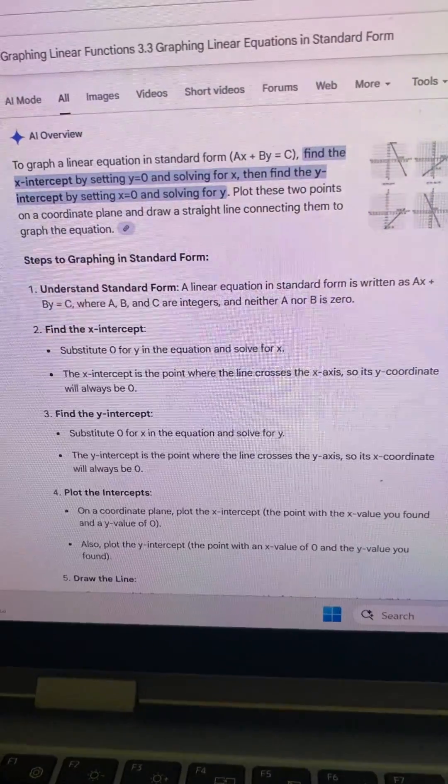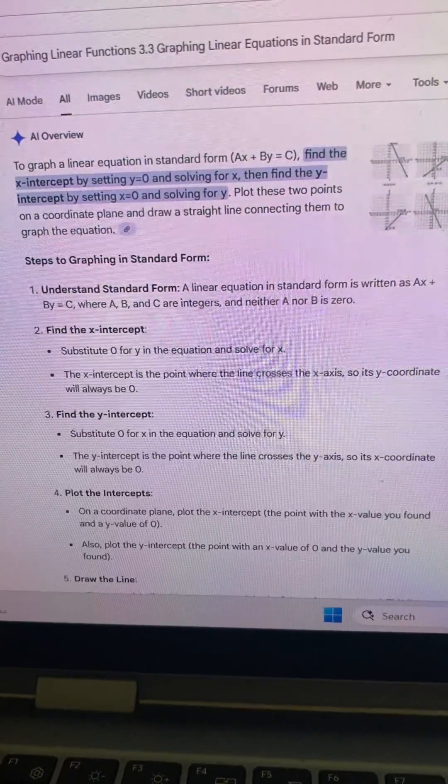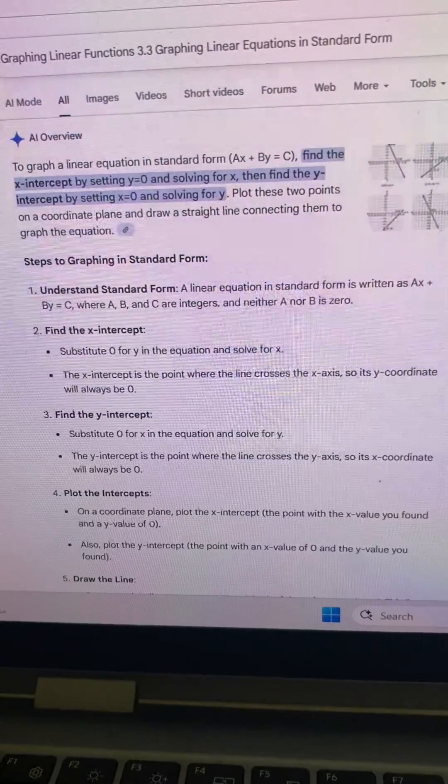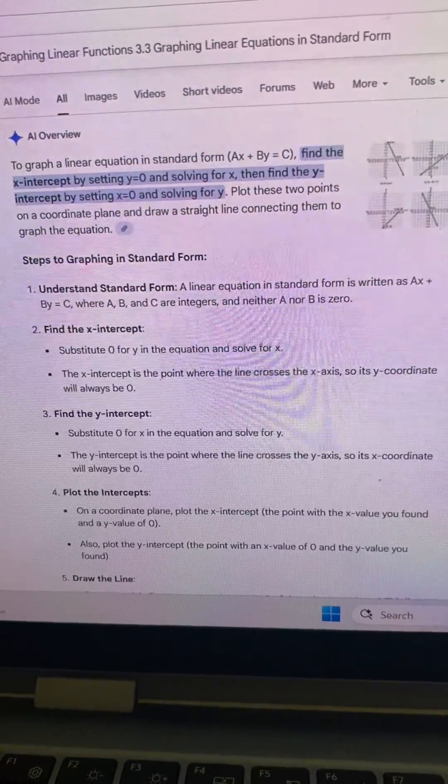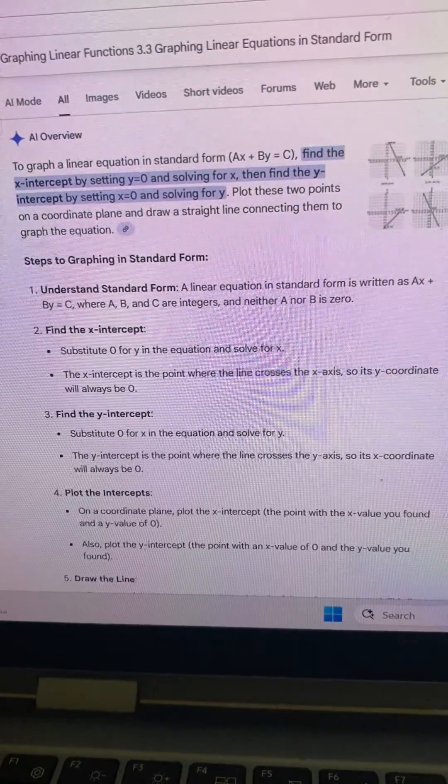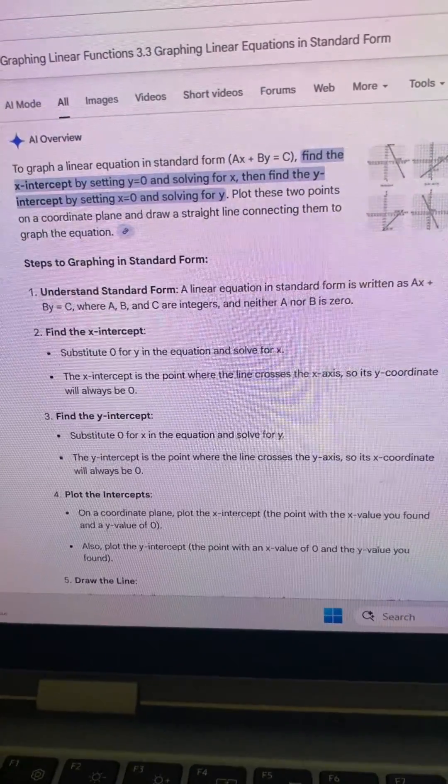Plot the intercepts. On a coordinate plane, plot the x-intercept, the point with the x-value you found and a y-value of 0. Also, plot the y-intercept, the point with an x-value of 0 and the y-value you found.